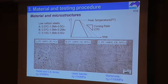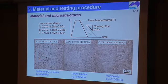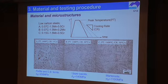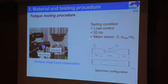The material used in this study is low-carbon steel as shown here. Microstructures are controlled by heat treatment with controlled peak temperature and cooling rate. The microstructures are polygonal and bainitic ferrite for material A, upper bainite for material B, and martensite for material C. Tensile strengths are also described here. The small fatigue crack growth behavior is successfully observed by microscopy, and the fatigue test conditions are shown here.